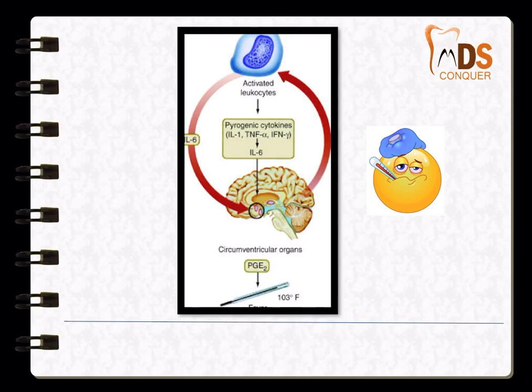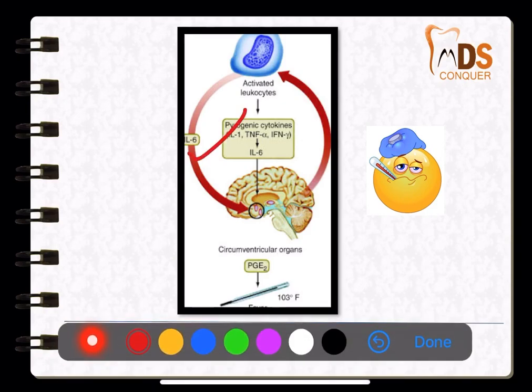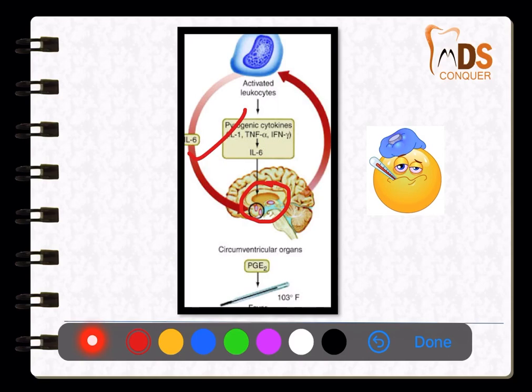Why is there high fever in these patients? Because inflammatory mediators like the interleukins and tumor necrosis factor go and affect the hypothalamus, where prostaglandins are released. The hypothalamus is caused to release prostaglandins, because of which the body temperature increases — that is the reason these patients have high-grade fever. The prostaglandins are mainly responsible for body temperature and the pyrogen center is present in the hypothalamus. These inflammatory mediators target the pyrogen center to release prostaglandin E2, and that is the reason the body temperature is increased.